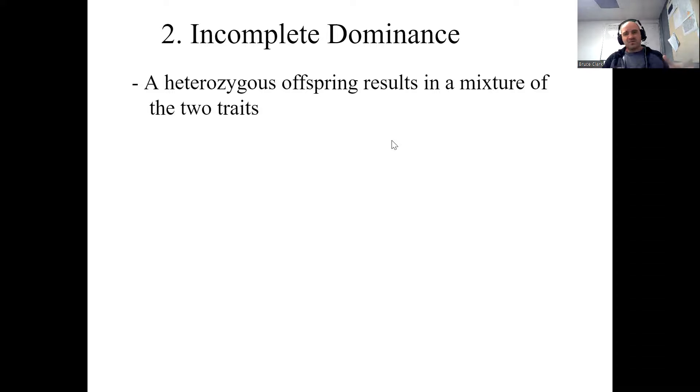So rather than just dominant versus recessive, our second type of inheritance is called incomplete dominance. This is that blending model of inheritance. So if you have a heterozygous offspring, if you have one of the dominant alleles and one of the recessive alleles, there's going to be a blending or a mixture of the two traits.